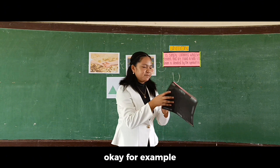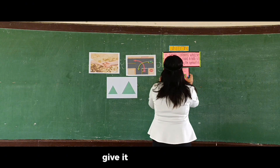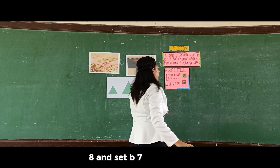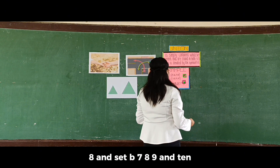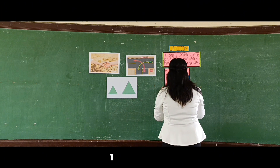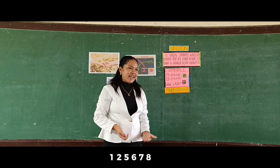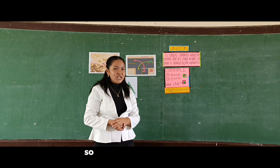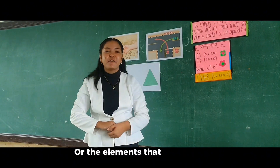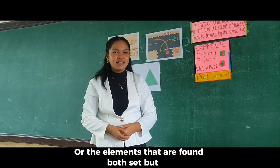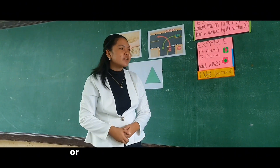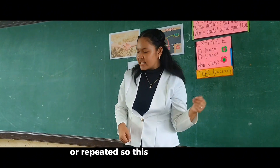For example, given set A = {5, C, 7, 8} and set B = {7, 8, 9, 10}, what is A union B, class? So A union B = {5, C, 7, 8, 9, 10}. As you can see, we combine the elements that are found in both sets, but we do not write down the numbers that are duplicated or repeated. This is the union of A and B.